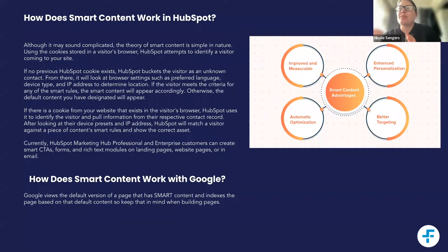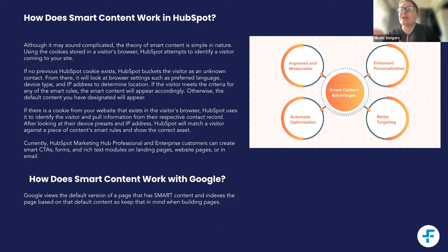Smart content is available in HubSpot Marketing Pro and Enterprise, and you can create smart CTAs, forms, and rich text modules on landing pages, websites, and emails. That's where you can use smart content.